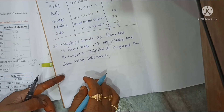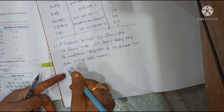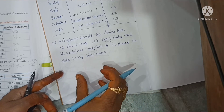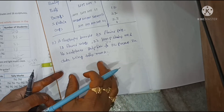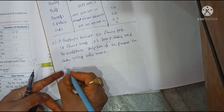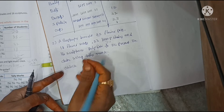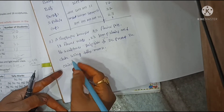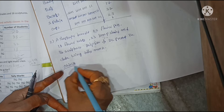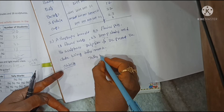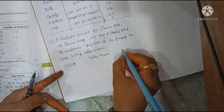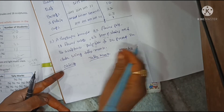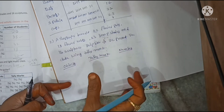For this problem, the objects and numbers are given, and we need to write the tally marks. We create a table with objects, tally marks, and numbers. Based on the given information, write the tally marks for each object.